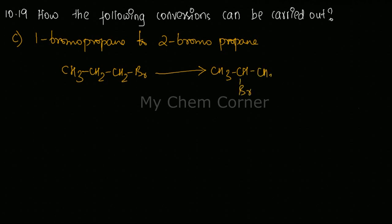So the Br has to move from position number one to position number two. First step, what we are going to do is eliminate the Br, form a double bond, and then go by the Markovnikov's rule. It's a very simple equation.